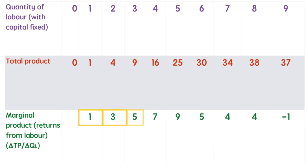The third worker adds an additional 5 units, the fourth an additional 7 units, and the fifth an additional 9 units. However, something interesting starts to happen after the fifth worker. The additional 6th worker actually contributes just 5 units. The seventh worker's contribution is just 4, and the eighth contributes an additional 4 units.